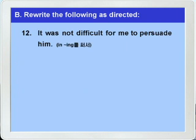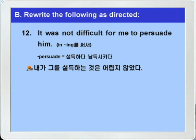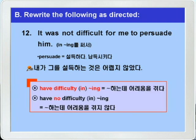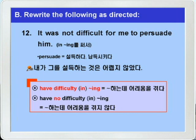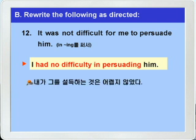다음 12번입니다. persuade는 '설득하다, 납득시키다' 이런 의미니까 '내가 그를 설득하는 것은 어렵지 않았다' 이런 말인데 'in -ing'를 써서 바꾸라는 것입니다. 'have difficulty in -ing'라는 구문 아시죠? 'have difficulty in -ing'는 in을 생략할 수 있는데 '뭐뭐 하는 데 어려움을 겪다' 이런 말입니다. 그런데 여기서는 '어렵지 않다, 어려움을 겪지 않았다' 이런 말이니까 'have no difficulty in -ing'를 써서 바꾸면 되겠습니다. 바꿀 때는 시제가 과거니까 have가 had가 되어야겠죠. 그리고 in 다음에는 'persuading'이 동명사를 쓰면 되겠습니다. 해석: 나는 그를 설득하는 데 어려움을 겪지 않았다.